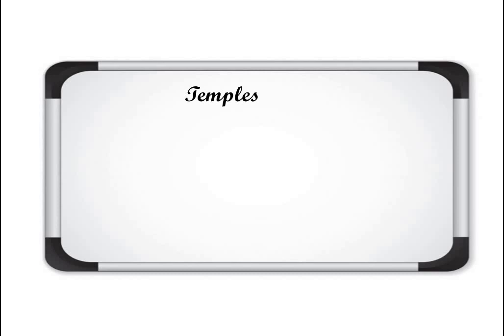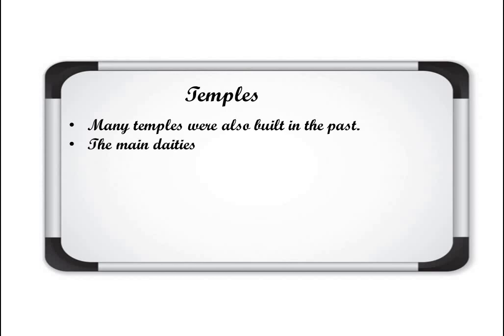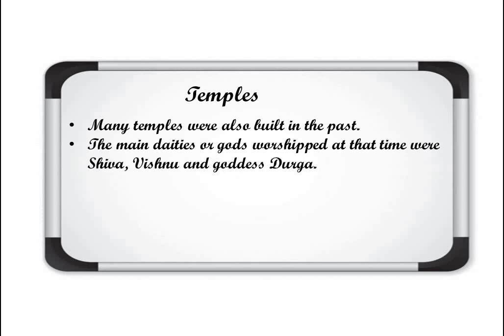Next is temples. A temple is a religious place for Hindus where they go to worship deities or gods. Many temples were also built in the past. During the Bhakti period, deities like God Shiva, Vishnu, and Goddess Durga were worshipped. So different temples dedicated to these deities were built in the past. As we also discussed in Chapter 10, these were the main deities worshipped at that time.